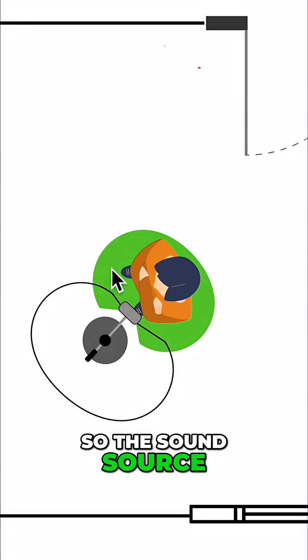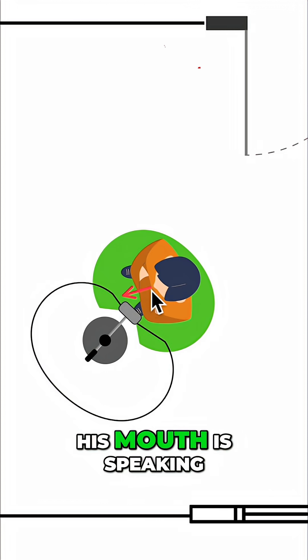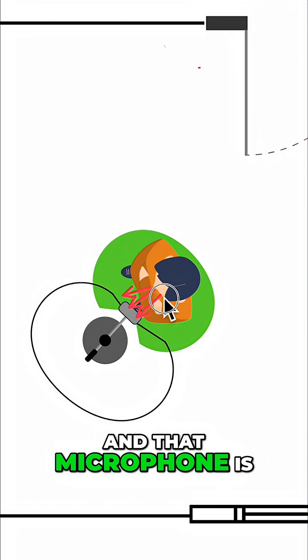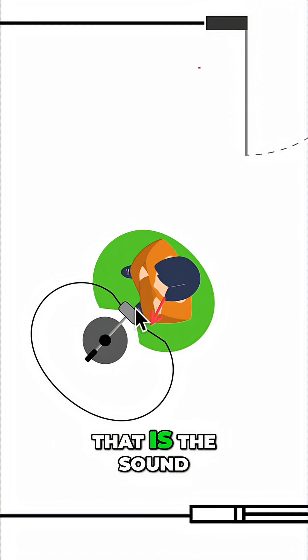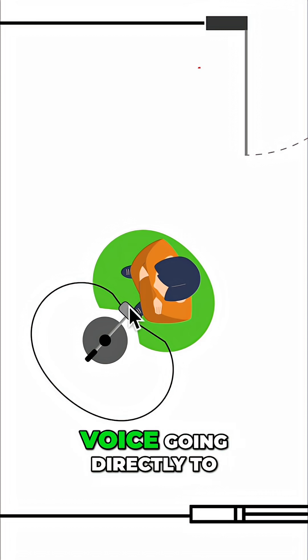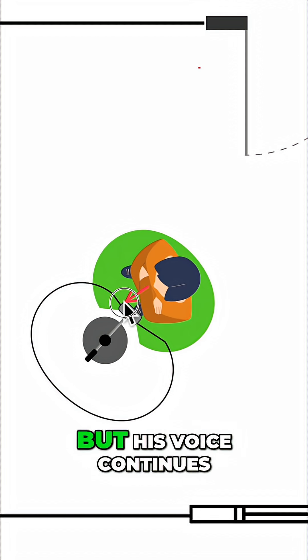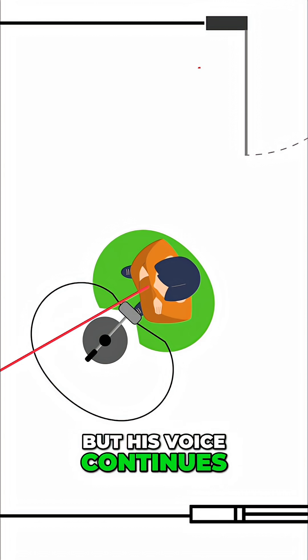The sound source, his voice, his mouth is speaking, and that microphone is going to be picking up the direct pure voice. That is the sound coming right from his voice going directly to the microphone. But his voice continues in the room.